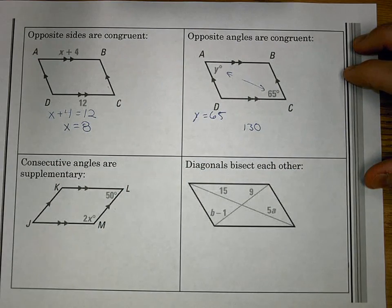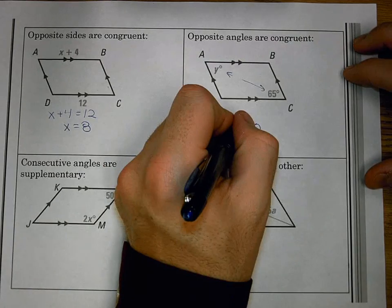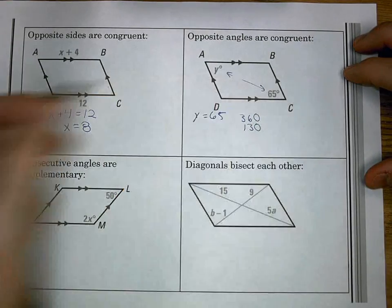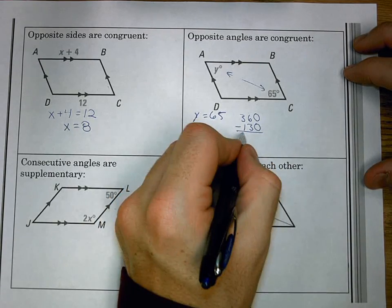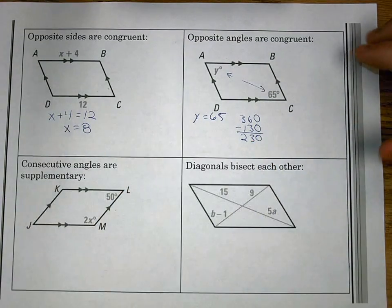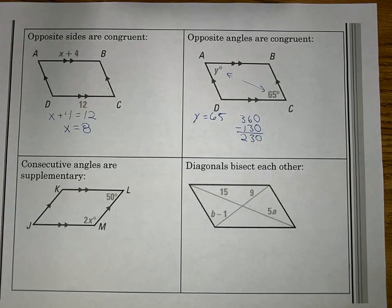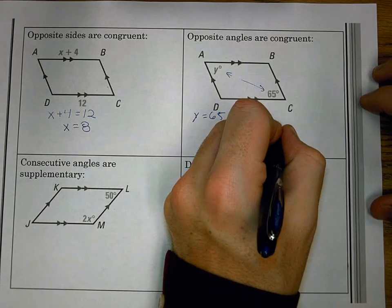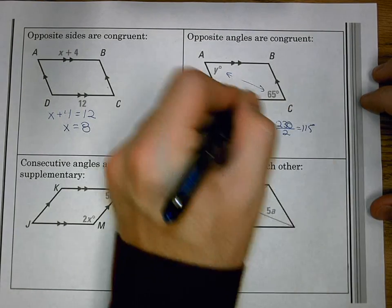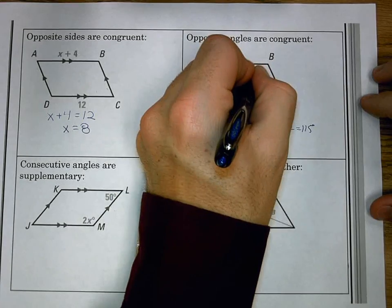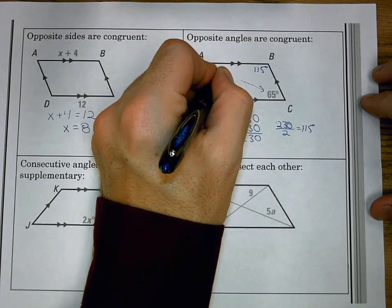Now, the total within a quadrilateral or a parallelogram is 360 degrees. That means for angles B and D, I have 230 degrees left over. Well, opposite angles are still congruent, so actually B and D would each be 115 degrees. And again, of course, we have Y is 65.